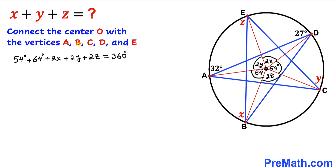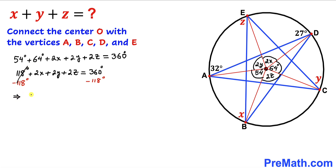Combining the like terms on the left-hand side gives us 118 degrees plus 2x plus 2y plus 2z equals 360 degrees. Now let's subtract 118 degrees from both sides. That gives us 2x plus 2y plus 2z equals 242 degrees.